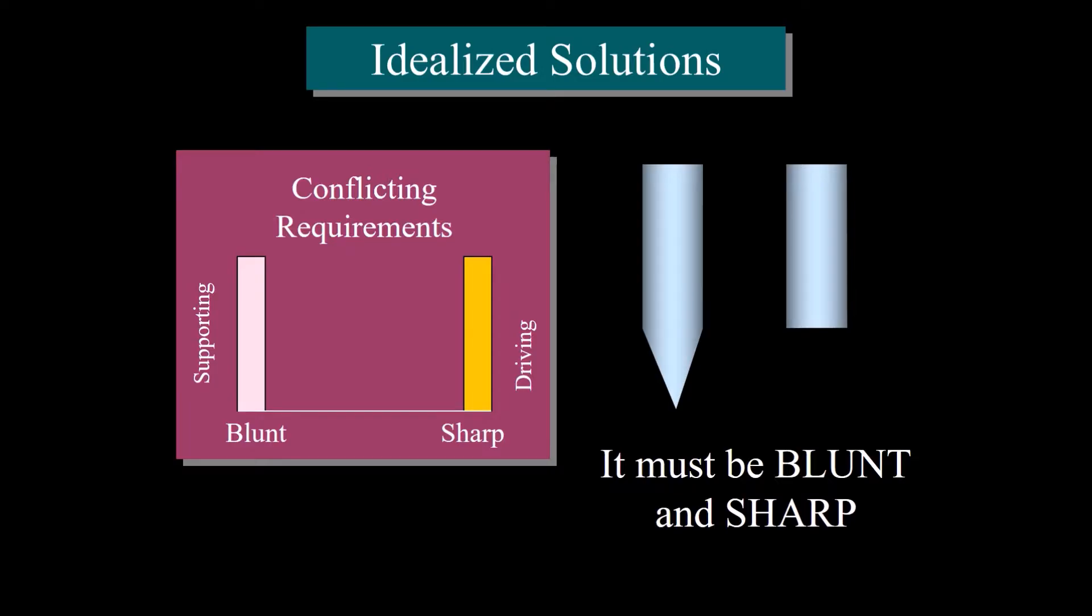In the last video we left off by stating that we want an ideal solution. We want the pile tip shape to be both blunt and sharp. For most people this seems absurd or even magic, but we shall see that these types of solutions are actually quite common.